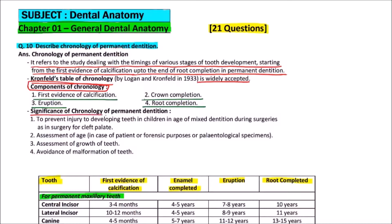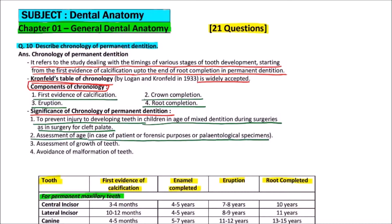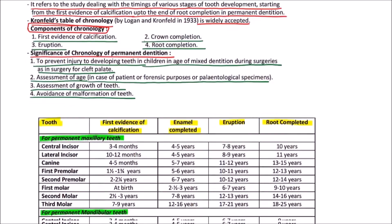The significance of chronology of permanent dentition is to prevent injury to developing teeth in children during the mixed dentition stage, such as during surgeries for cleft palate. It is also important for assessment of age for forensic or paleontological purposes, and for assessment of growth of teeth to avoid any malformation.